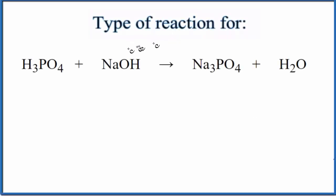In this video we'll look at the type of reaction for H3PO4 plus NaOH. This is phosphoric acid and this is sodium hydroxide. The products we have here you'll get if you have a lot of sodium hydroxide, so in this reaction we're saying we have a good bit of sodium hydroxide.